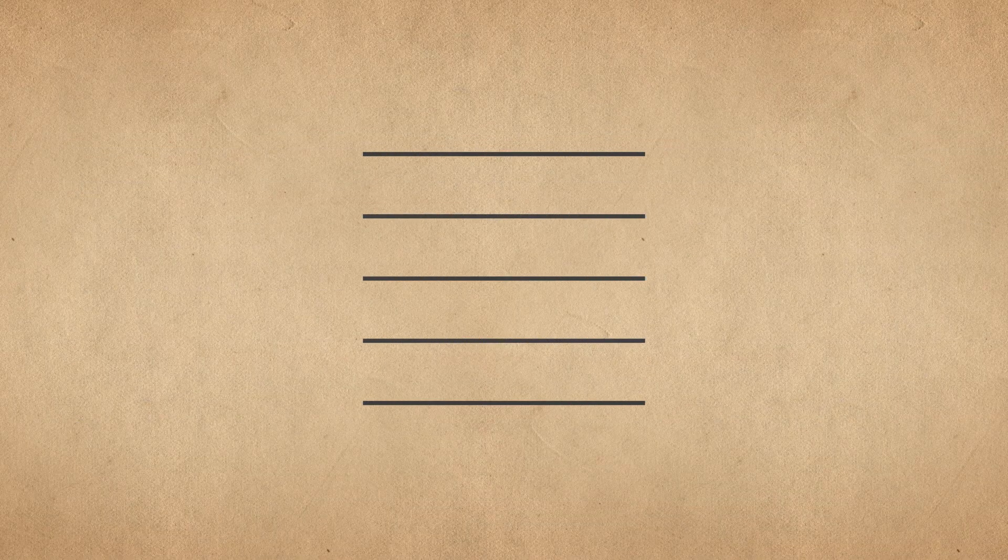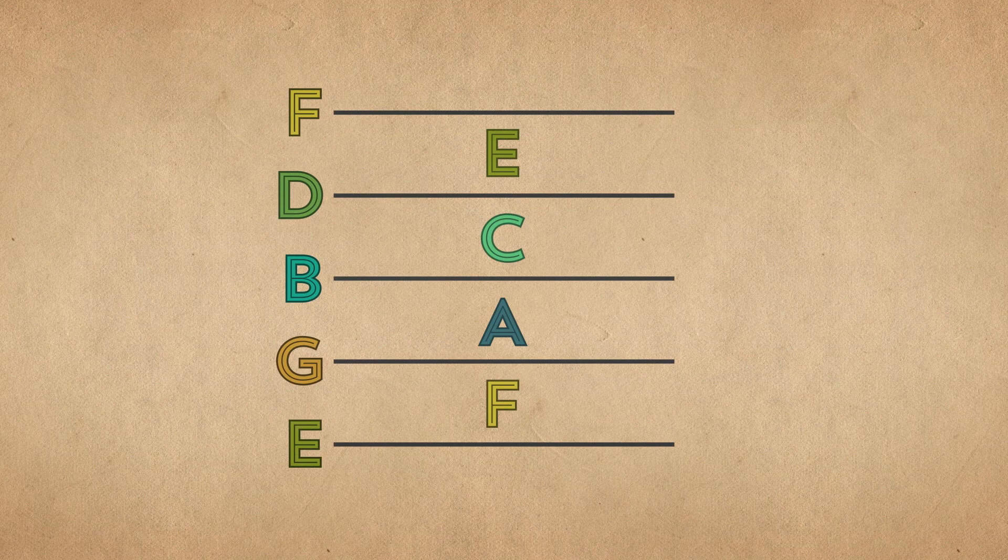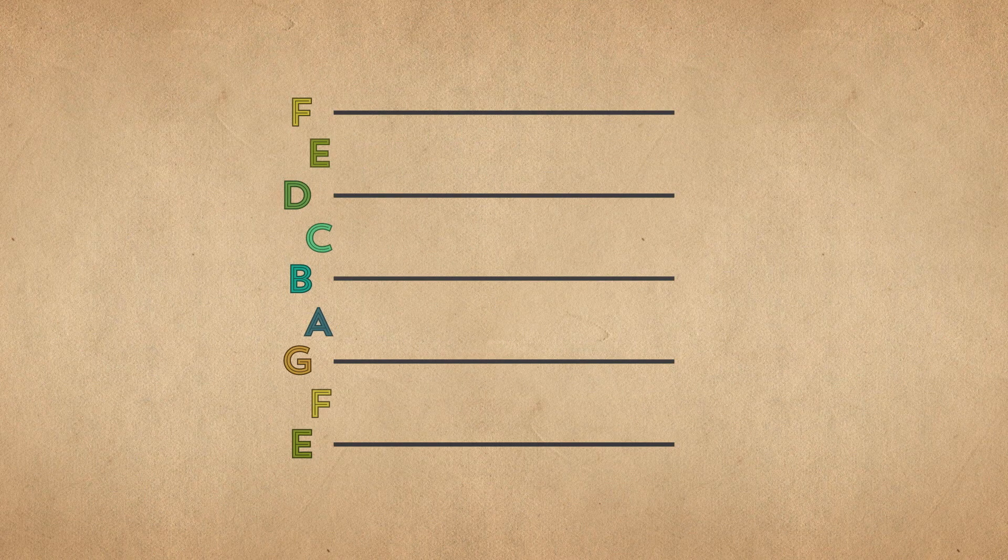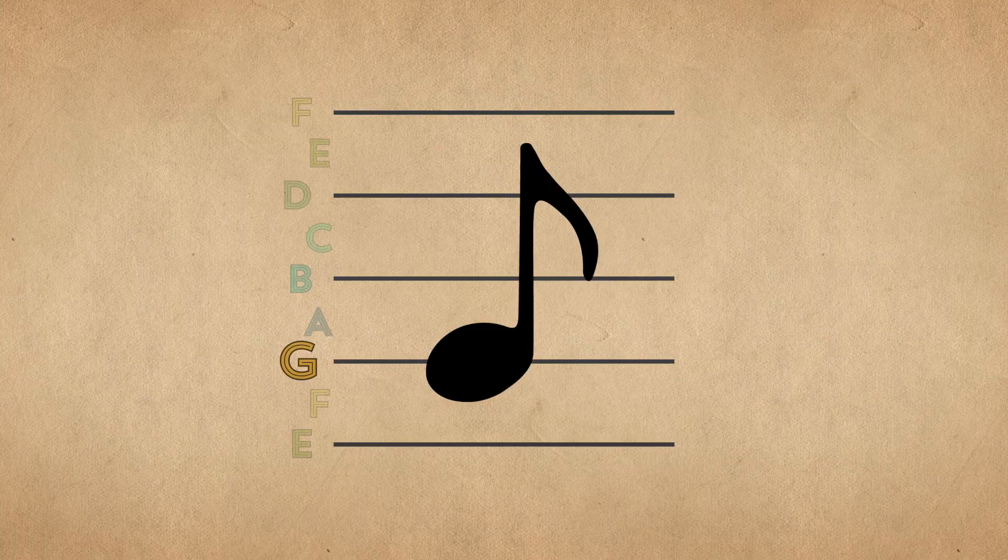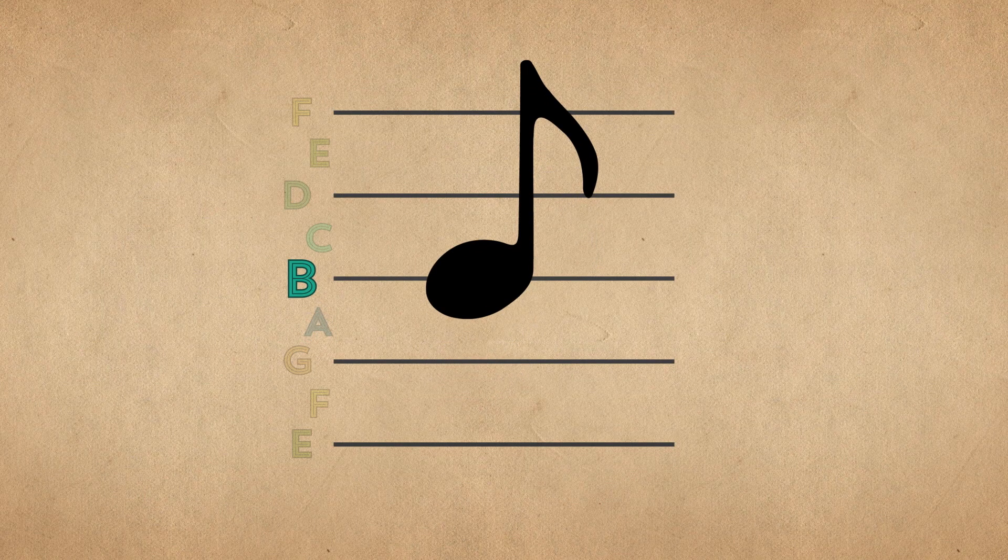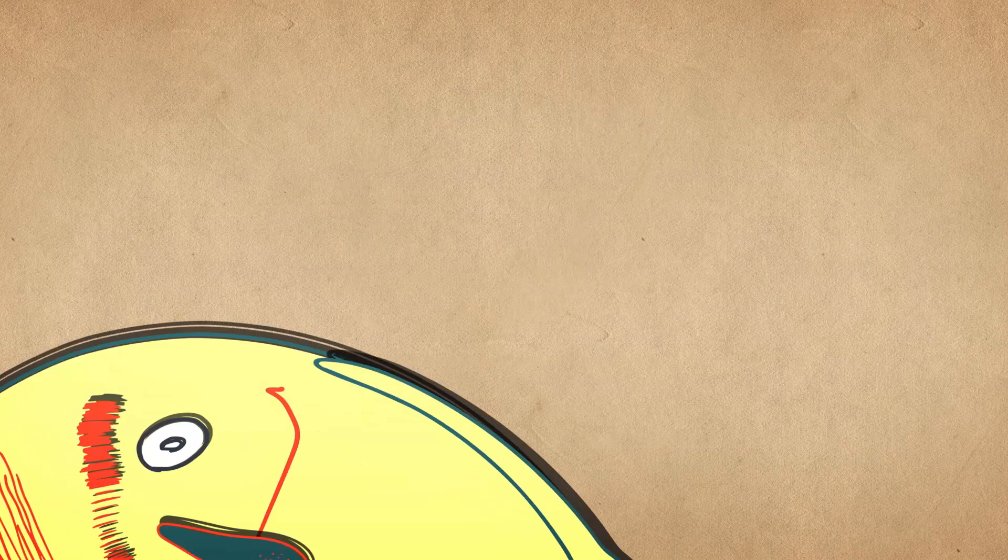Going back to the staff, every line and every space between two lines represents a separate pitch. If we put a note in one of these lines, or in one of these spaces, we're telling a performer to play that pitch. The higher up on the staff a note is placed, the higher the pitch. But there are obviously many, many more pitches than the nine that these lines and spaces give us.